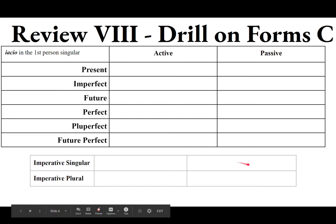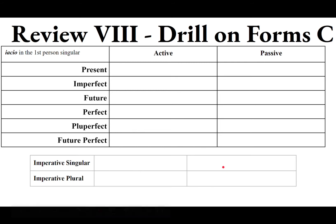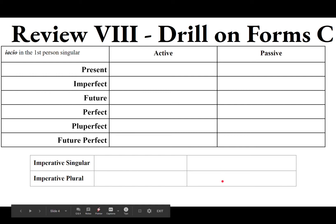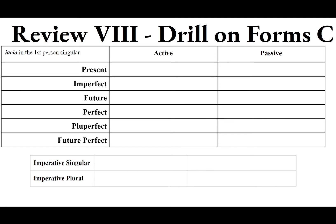For the passive imperatives: the singular passive imperative is the same as the second principal part, IACERE — be thrown / get thrown. The plural is the same as the second plural present passive indicative, ending in MINI: IACIMINI — be thrown ye / get thrown, you guys.